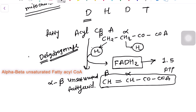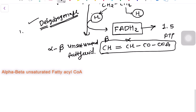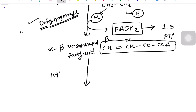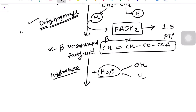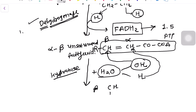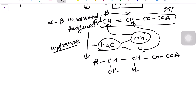The second step is hydration. Water (H2O) is added — the OH binds to the beta carbon and the H binds to the alpha carbon, forming beta-hydroxy fatty acyl CoA.